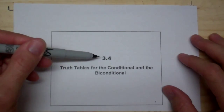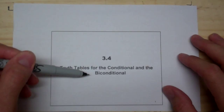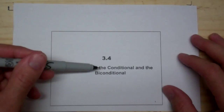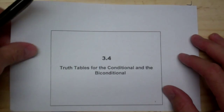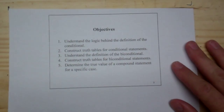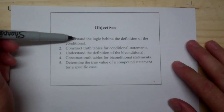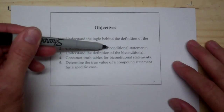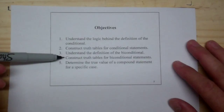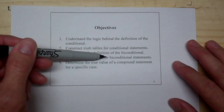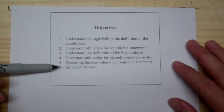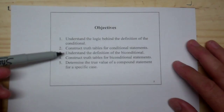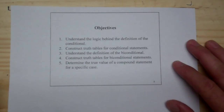Today we're talking about 3.4: truth tables for the conditional and the biconditional. This will finish up our truth tables for the other two connectives. Our objectives are: understand the logic behind the definition of the conditional, construct truth tables for conditional statements, understand the definition of the biconditional, construct a truth table for biconditional statements, and determine the truth value of a compound statement for a specific case.